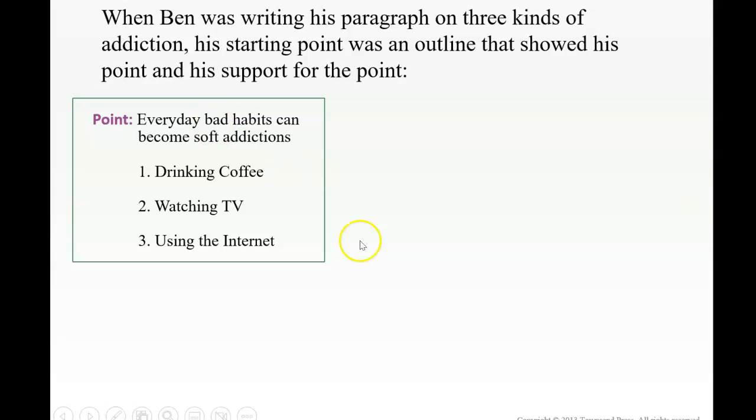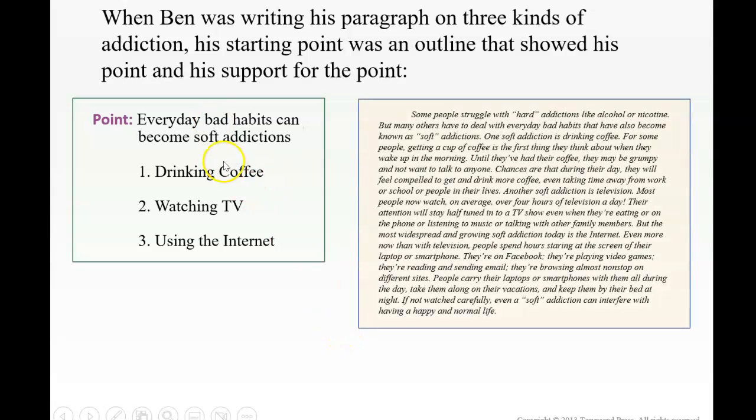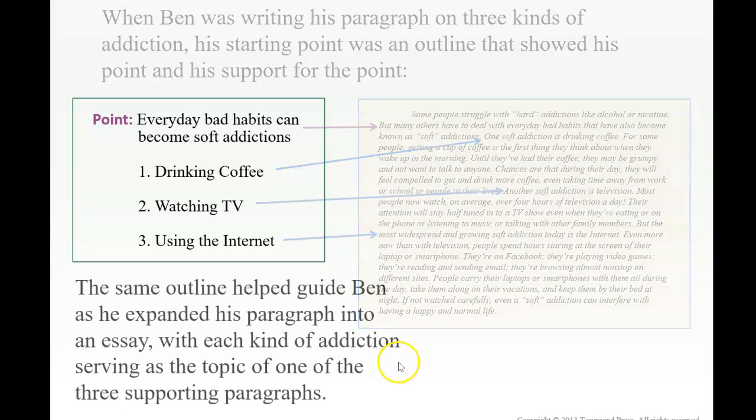So here we're on Ben's, so his points about soft addictions, that's the topic sentence. And then here's the support. These would be the legs of the table, so instead of having four we have three. And these are considered major details. And if you notice, one, another, these are addition words or clues. They help us map it out for our readers. They can follow it more easily and then we have three major details here.